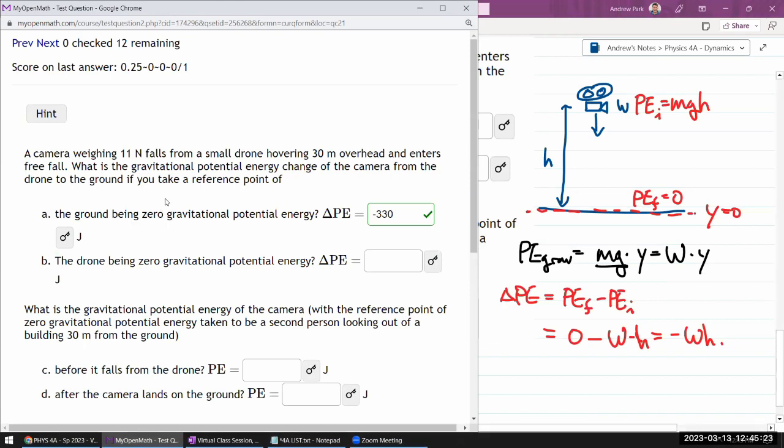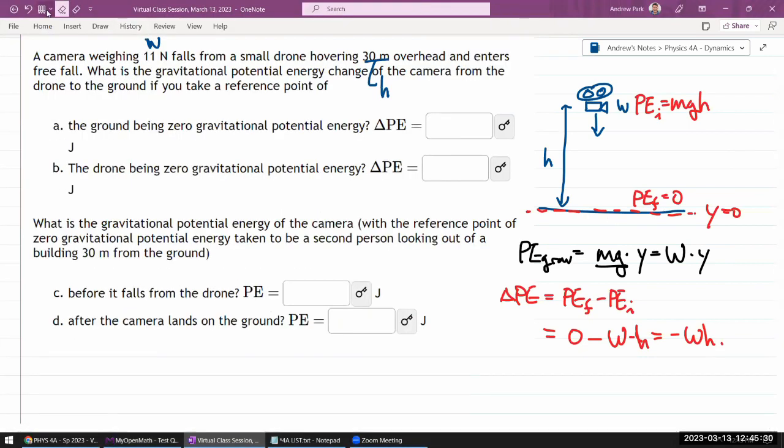Okay, and the second one, the drone being zero gravitational potential energy. So for the second question, we are saying we don't define our reference in this initial way. We define it this way. Let's say the position of the drone is where y is equal to zero.